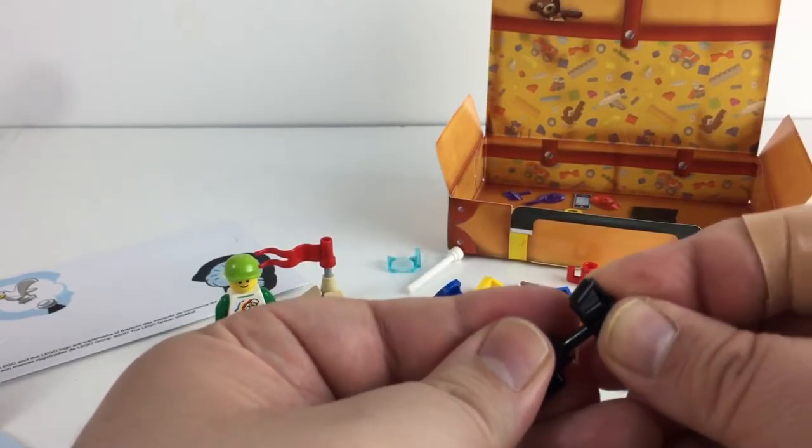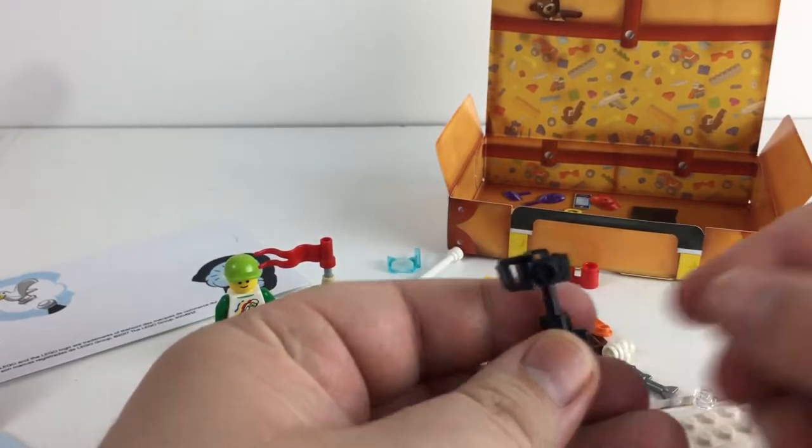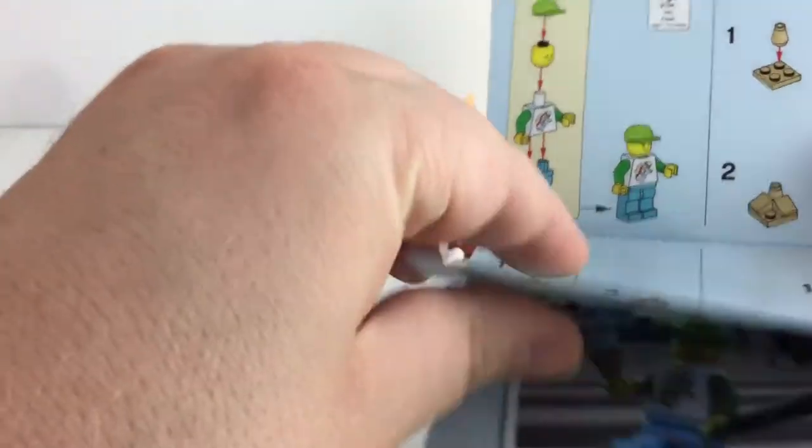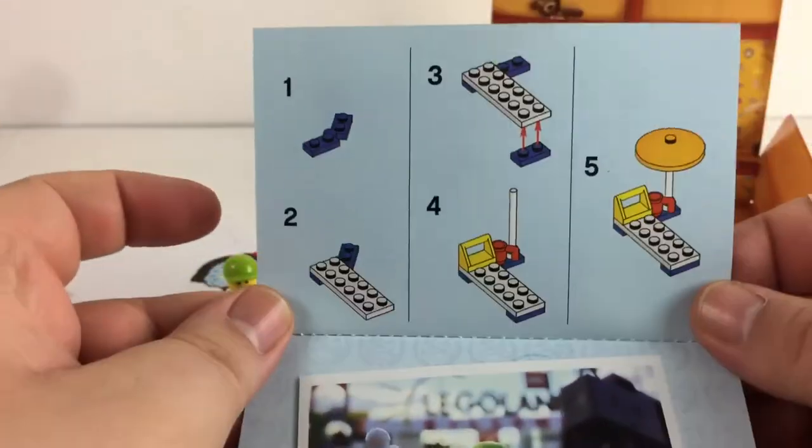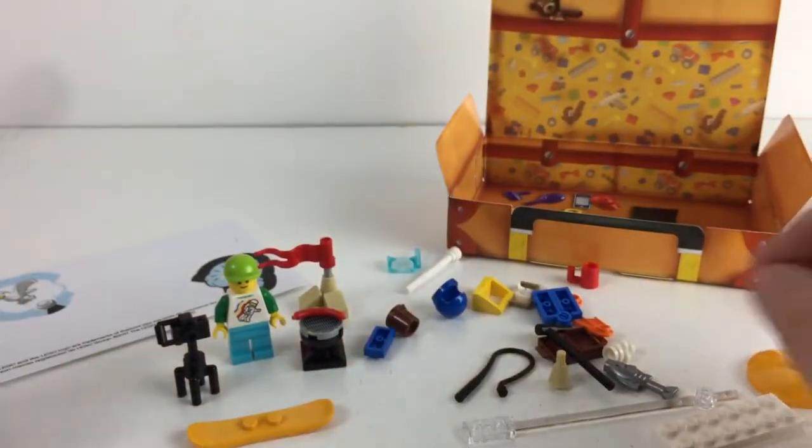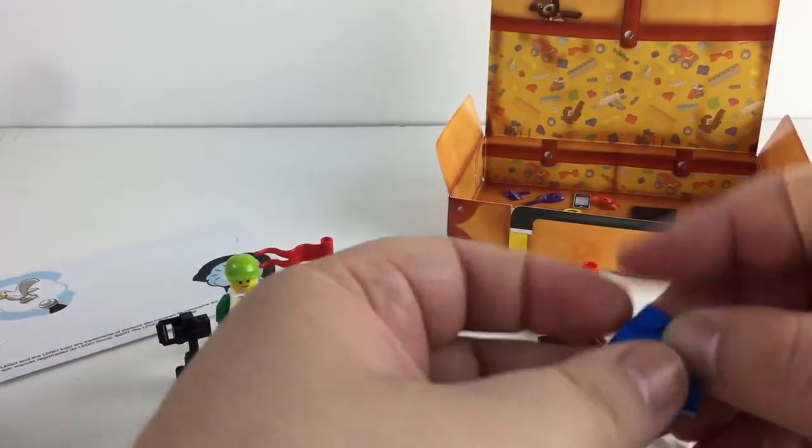Let's see what else they want us to build. Oh, and it looks like a lounge chair with an umbrella for the beach. So we have this piece, and then that goes on like so—the bottom legs to it.